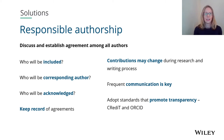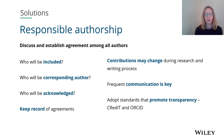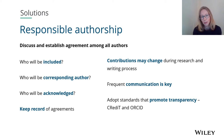So what are the solutions? It's all about forging responsible authorship, and paramount to this is to discuss and establish agreement among all co-authors early on in the process: who should be included, who will be corresponding author, who will be acknowledged? It's really important to have those conversations early — not at the point of writing up the paper. As with any meeting, keep a record of your agreements, because contributions may change during the research and writing process and other people may become involved, so frequent communication is key. Adopting standards that promote transparency, such as CRediT and ORCID, which I'll discuss in the next slides, are helpful as well.